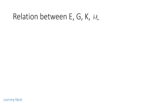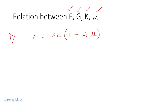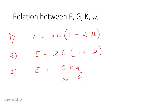The relations between elastic constants — modulus of elasticity (E), modulus of rigidity (G), bulk modulus (K), and Poisson's ratio (μ) — are given by four key relationships connecting these constants to each other.